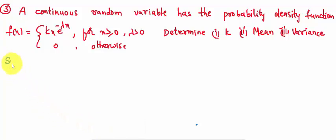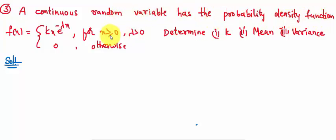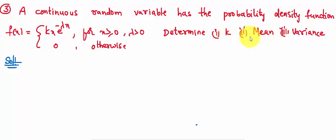Let us discuss a problem on continuous random variable. They have given the probability density function and we can find out the unknown value k, mean, and variance. The problem is: a continuous random variable has the probability density function f(x) = kx·e^(-λx) for x ≥ 0, where λ is a positive value. Determine: first, the unknown value k; second, the mean; third, the variance.